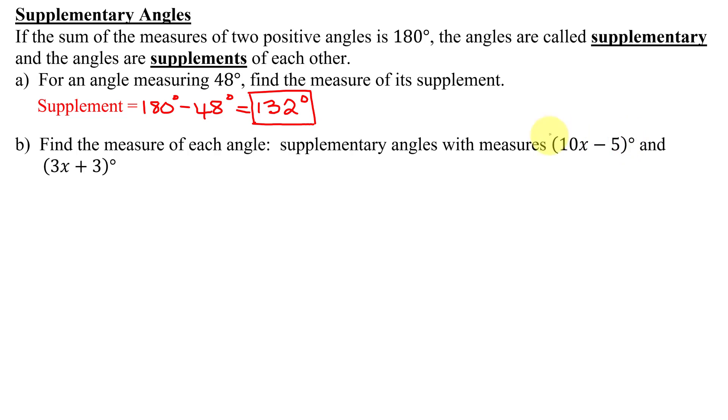Since these angles are supplementary, if I add the two measures, I have to get 180 degrees. So I'm going to have (10x - 5)° + (3x + 3)° = 180°.